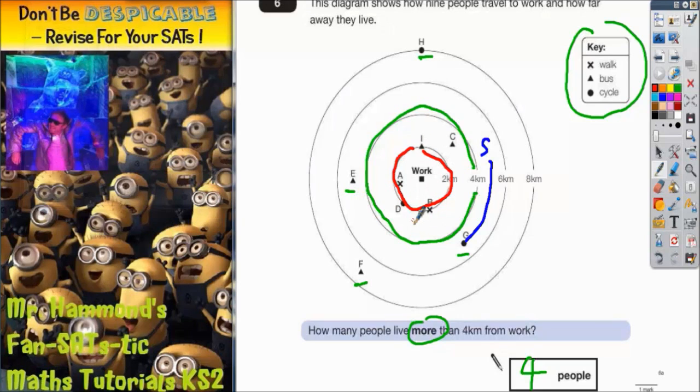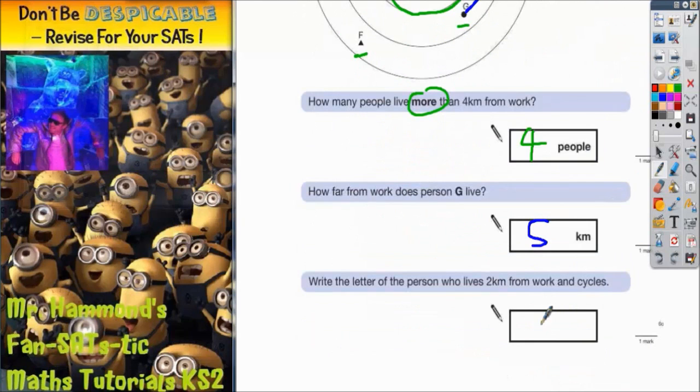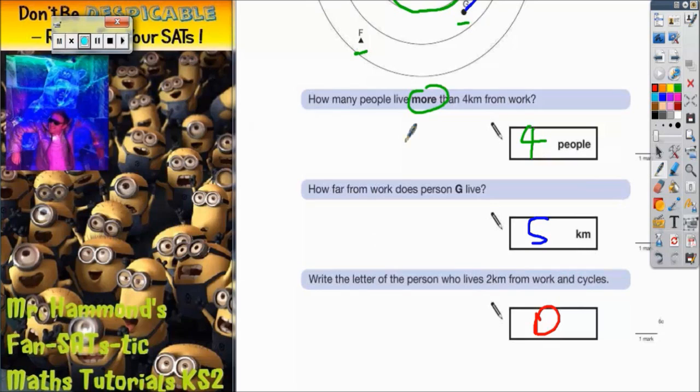But we're looking for cycles, so cycles is going to be the one with a circle, and the only one with a circle is letter D. So that has to be letter D.